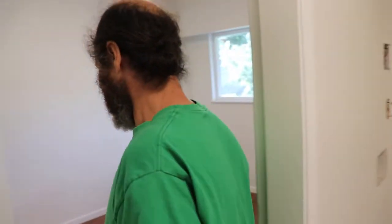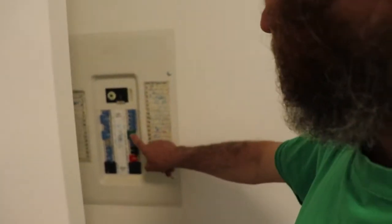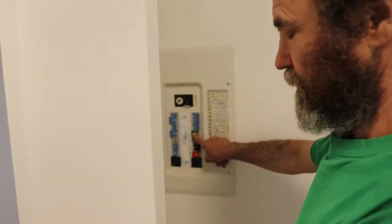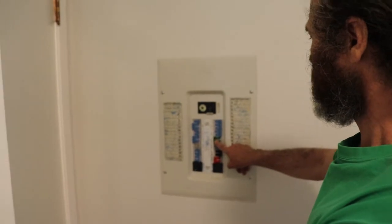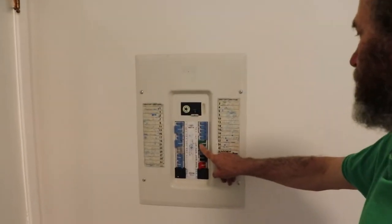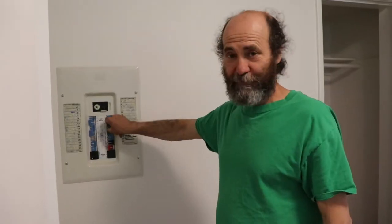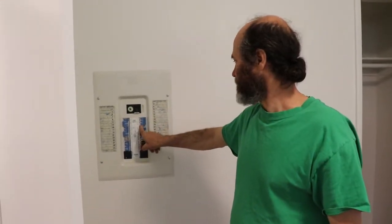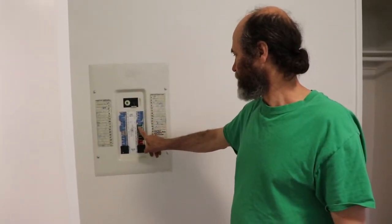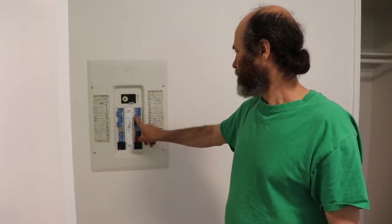The breaker box is right here. What I see is this is the washer breaker when it is off, and this is the one for the dryer.